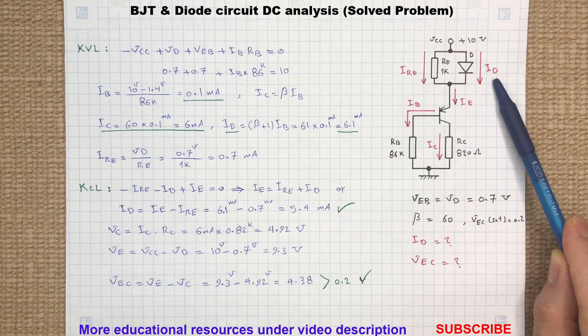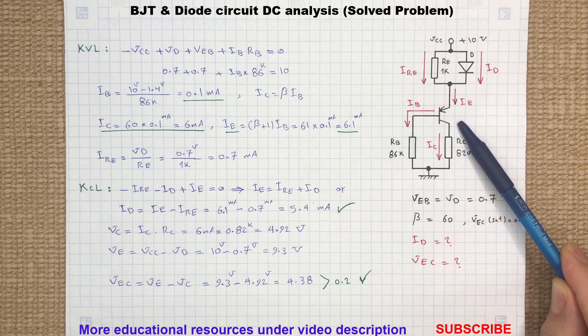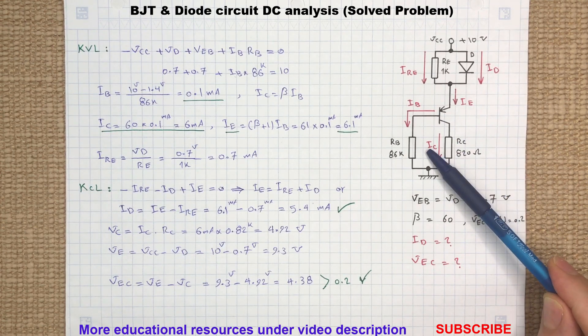To determine the current flowing through the diode and the voltage drop across the emitter-collector terminals, we need to find the emitter and collector currents.